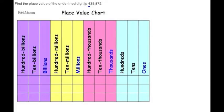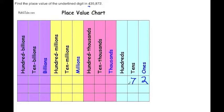We're going to place this whole thing into a place value chart. The first number is two — always remember to begin with the rightmost digit — so we put two right here, that's our ones column. Next value is seven, so we put the seven here.